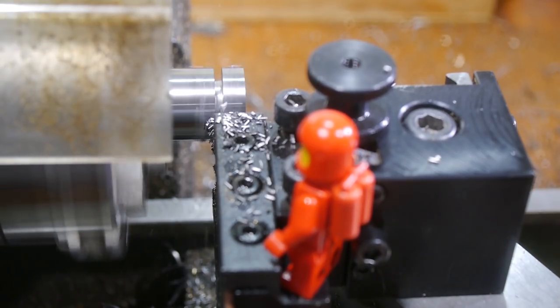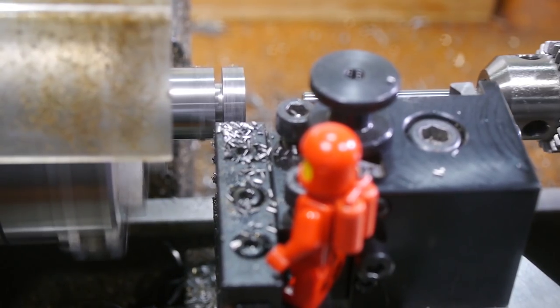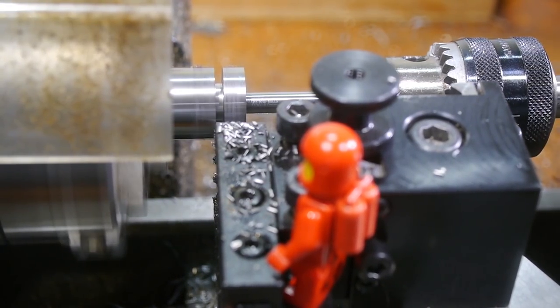Parting the wheel off was nice and easy, largely because the 10mm centre hole made the cut quite shallow. I used an old end mill shank to catch the part, and avoid any damage from falling into the chips.